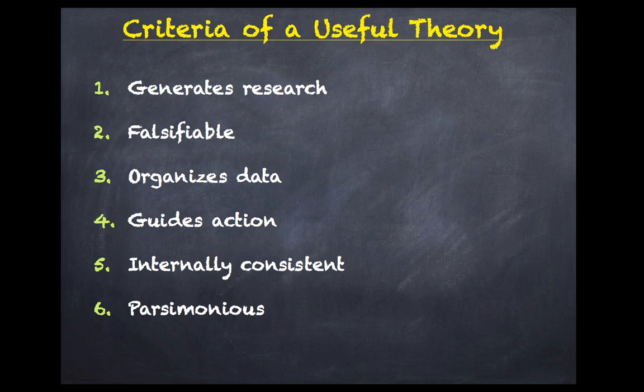The third criterion is that a useful theory organizes data. Without some organization or classification, research findings would remain isolated and meaningless. Unless data are organized into some intelligible framework, scientists are left with no clear direction to follow in the pursuit of further knowledge — meaning the group of data and research findings must be compatible with each other. The fourth criterion is that it guides action. A good theory provides a structure for finding many answers, and without a useful theory, practitioners and researchers would stumble in the darkness of trial and error techniques.